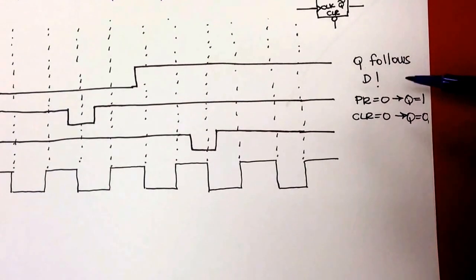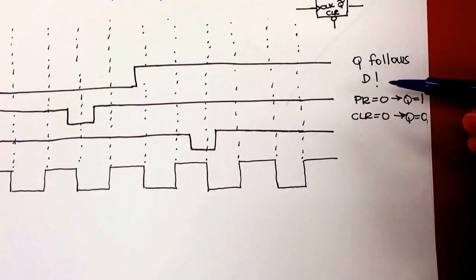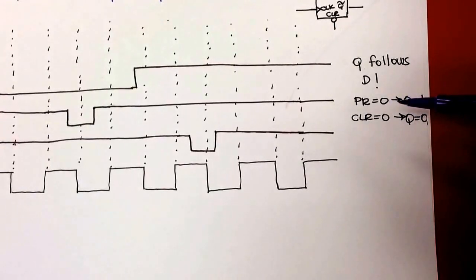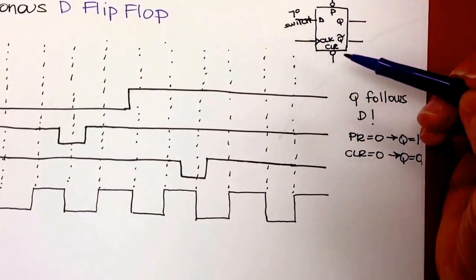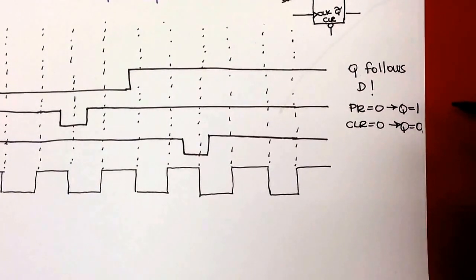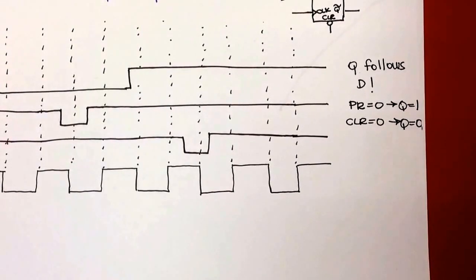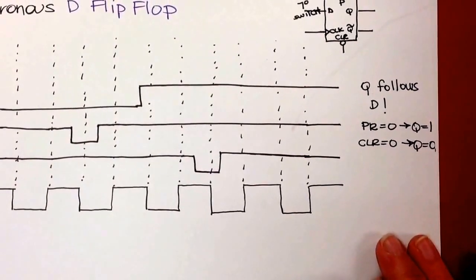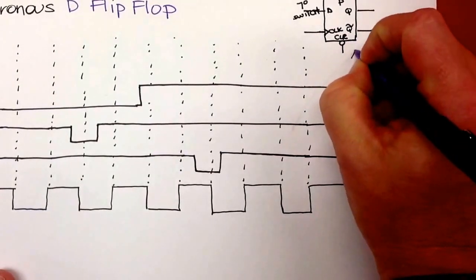Remember for a D flip-flop, Q follows D. And if you change the preset to zero — because these are active low, they have bubbles so they're active low — then Q becomes one. Clear zero, Q equals zero. You can't have them both set equal to zero. So the bubbles mean that this one is active low.